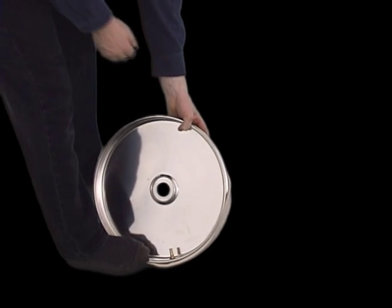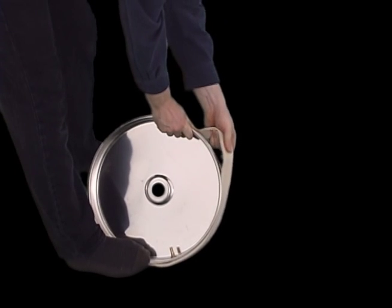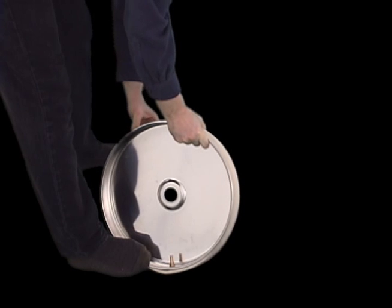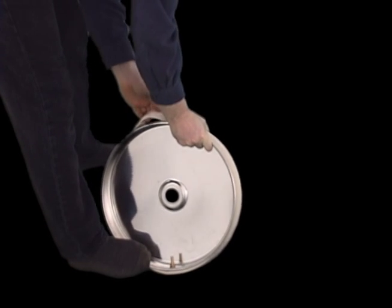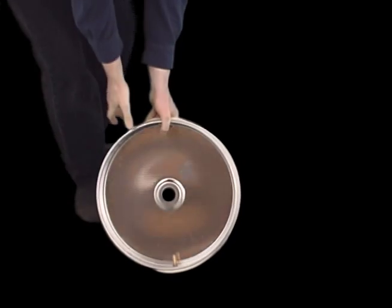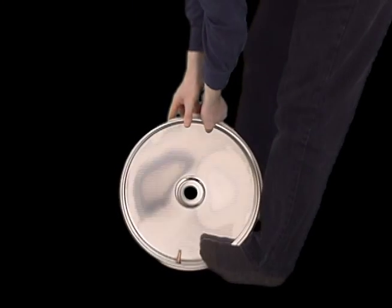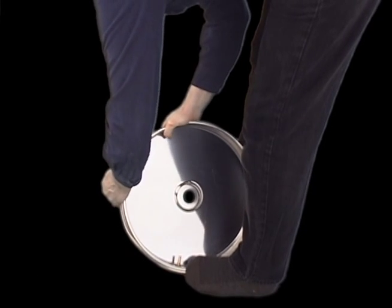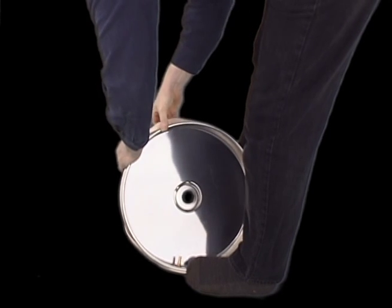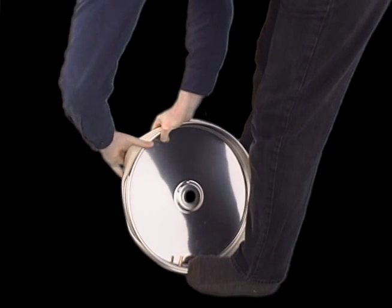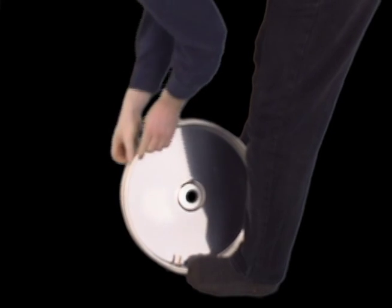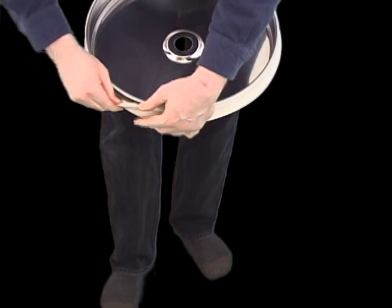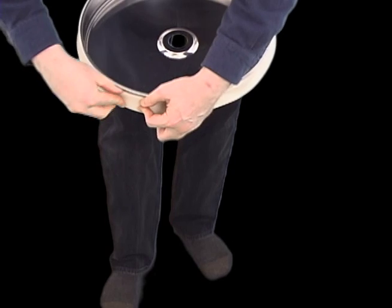The bladder will need to be stretched onto the lid, and it can be a little tough getting it on. Setting the lid on the floor and bracing it with your foot gives you something to pull against, and often helps make the job easier. Once the bladder is on, fine-tune the placement so that the bladder sits evenly.